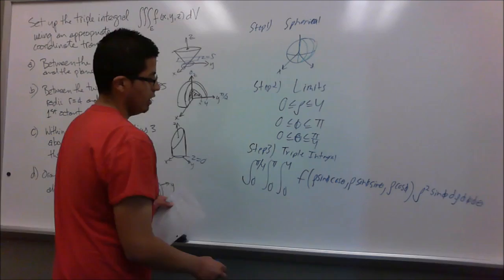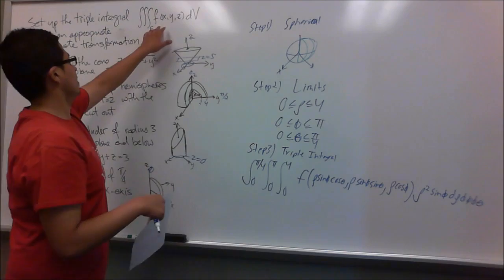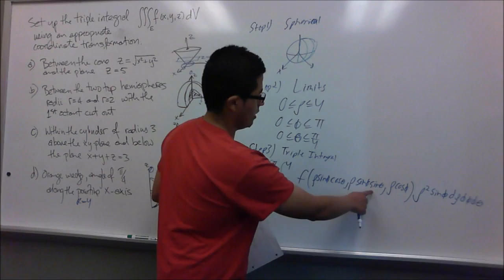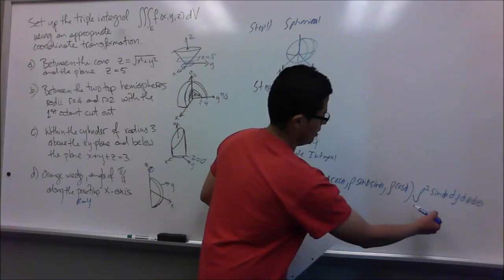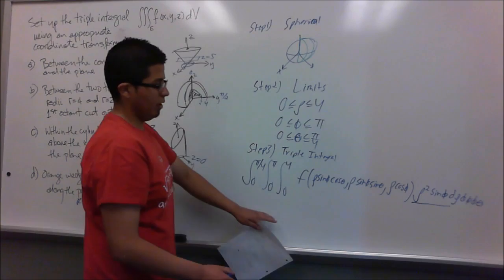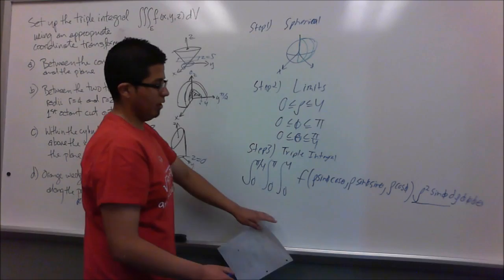In spherical coordinates, x equals rho sine phi cosine theta, y equals rho sine phi sine theta, and z equals rho cosine phi. The rho squared sine phi is the Jacobian. Notice that rho goes with limits 0 to 4, phi has limits 0 to pi, and theta has limits 0 to pi over 4.